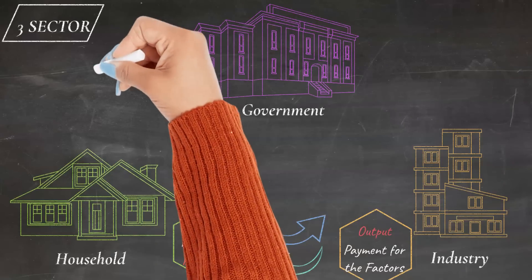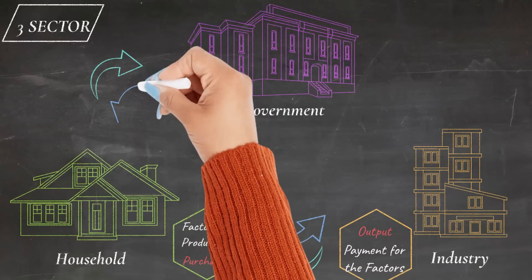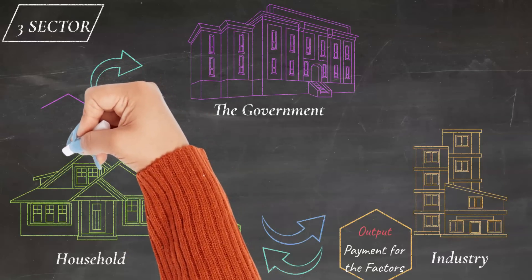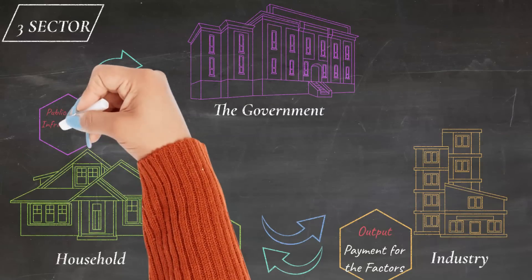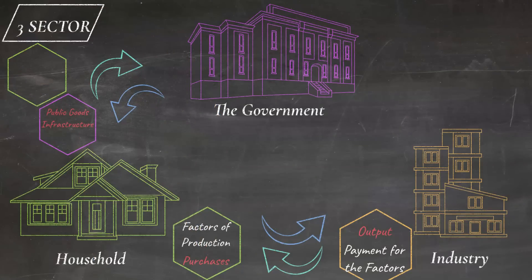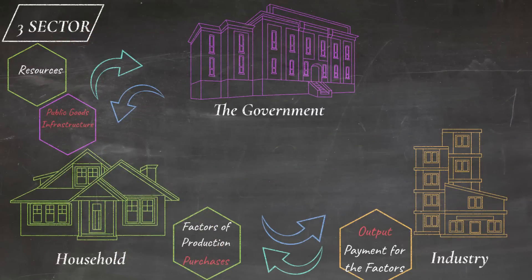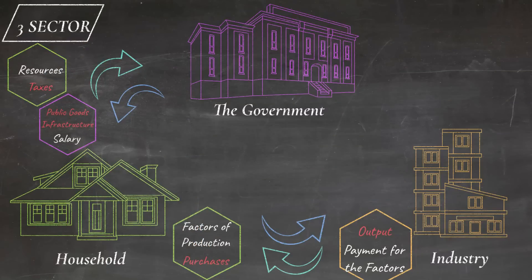Coming to the interaction between the household and the government, the government supplies various public goods, provides infrastructure, and employment opportunities to the household. It gets resources from the household in terms of labor, or people working in different government offices, for which the government pays wages or salary. It also receives taxes for the various public goods and infrastructure it provides.